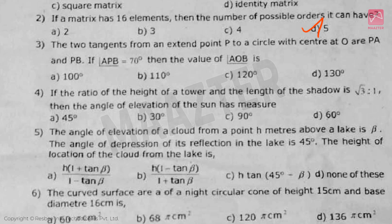Next, the two tangents from an extent point P to a circle with center at O, are PA and PB. If angle APB equal to 70 degree, then the value of angle AOB is, answer is option B.